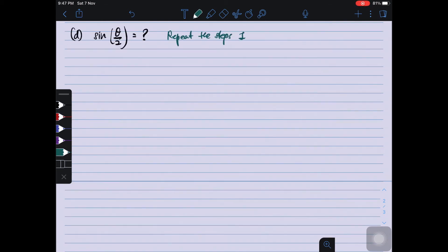Okay. Now, let's solve question D. Which is sine. Sine θ/2. So it is actually repeating the step I used just now. Exactly quite the same. Which is I start with double angle. Okay.